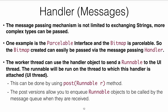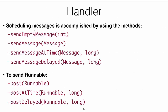To recap: message passing is not limited to exchanging strings — you can send more complex types, but try to keep data small because large types like images take a lot of space. You can also send a Parcelable, for example a Bitmap, over the handler. The worker thread can also send a runnable to the UI thread using the post method. Other useful methods include sendEmptyMessage, sendMessage, sendMessageAtTime, sendMessageDelayed, postDelayed, and postAtTime.